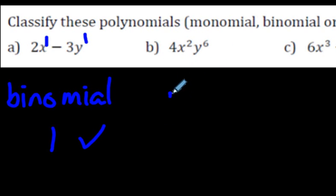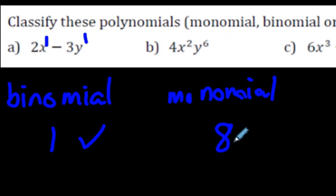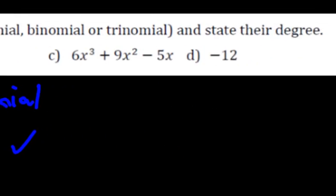This is a monomial here. There's no plus or minus signs. It's just one term. That's a monomial. And the degree is 2 plus 6 is 8. That is the degree.